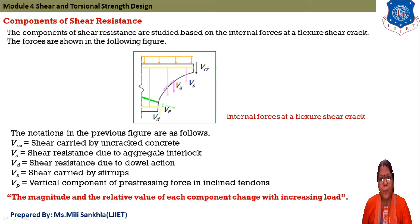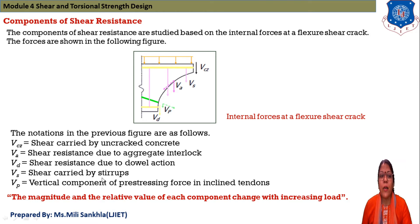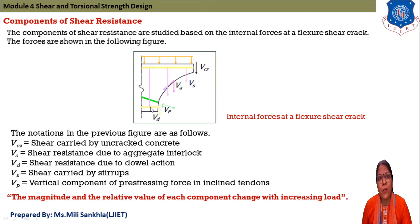VA means shear resistance due to aggregate interlock. VD means shear resistance due to dowel action, which occurs in the reinforcement. VS means shear carried by stirrups, because we provide stirrups near the support of our beam — this will be discussed later. VP means the vertical component of pre-stressing force in inclined tendons; this pre-stressing force induced in our beam is noted as VP.